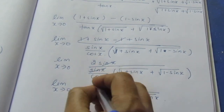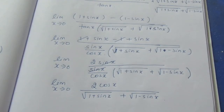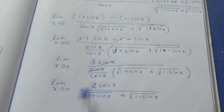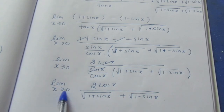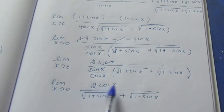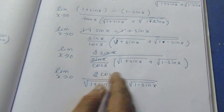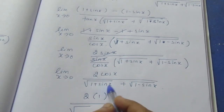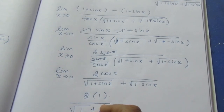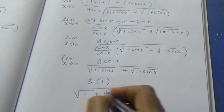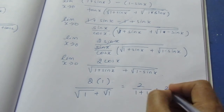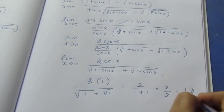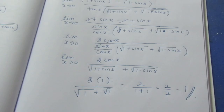Now we can substitute x = 0 directly. cos(0) is 1. sin(0) is 0, so root of (1 plus 0) is 1, and root of (1 minus 0) is also 1. So the answer is 1 divided by (1 plus 1), which equals 1 over 2. Wait — it simplifies to 1 divided by 2, giving the final answer of 1. That is the sum. Thank you.